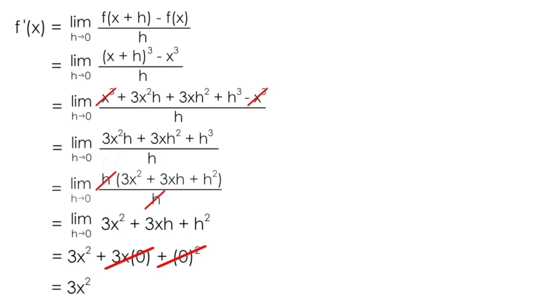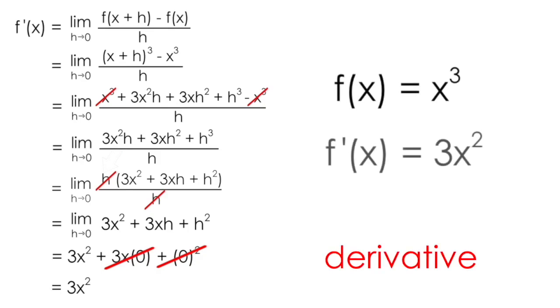This is an expression for the slope of the tangent line at any given point for the function f(x) = x³. So for the function x³, we say the derivative, or f'(x), is equal to 3x².